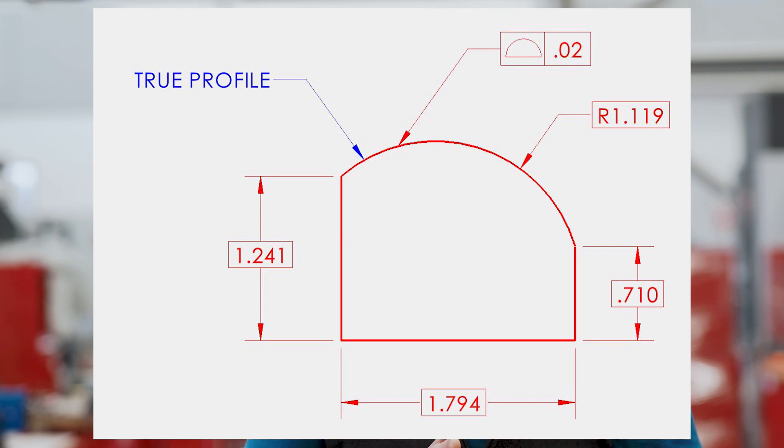The true profile is almost always defined with basic dimensions. In the newer standard, that's a requirement. In the older standard, you would sometimes see a flat surface defined with plus or minus dimensions alongside a profile tolerance. The difference between a profile tolerance attached to a surface with a plus or minus tolerance versus a basic dimension means slightly different things.